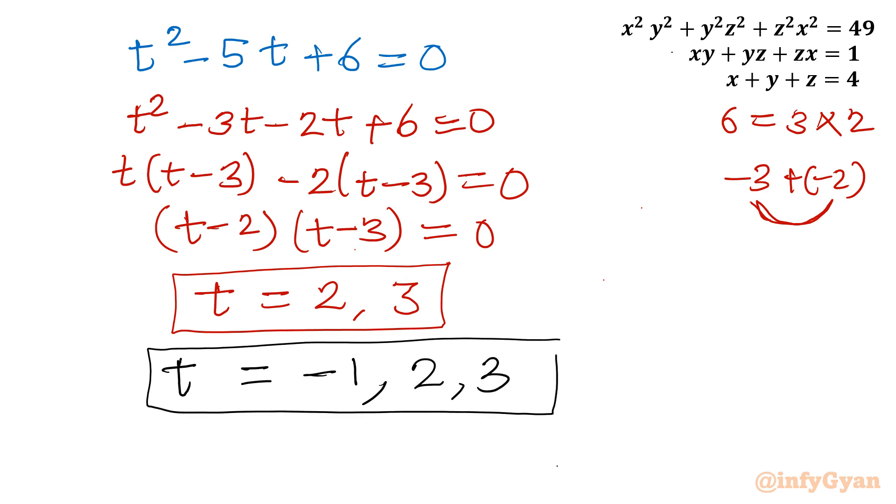So what is t? t is x, y, z, the roots of cubic equation which is framed in variable t. So let me write our answer. Ordered pairs x, y, z, we can begin with 3 roots: minus 1, 2, and 3. So I can write minus 1, 2, 3.